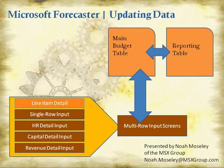Line item detail will let you add details to any individual account on the multi-row input screens. So if you have a travel account on multi-row and you don't want to just type in five thousand dollars for travel, you want to break it down between several different trips. You can add line item details to that travel account — you might have five rows there, a thousand dollars each. Row one might be Vegas, row two might be Atlanta, DC, New York, and wherever else. Those will roll up to the account level balance. That's line item detail — a very easy way to add a breakdown to your account balances.